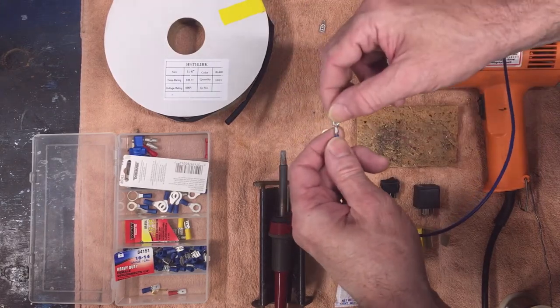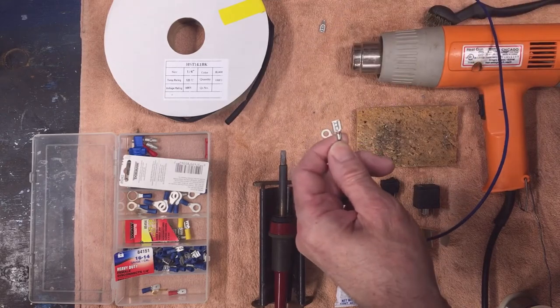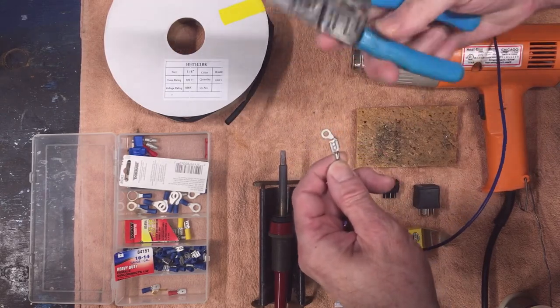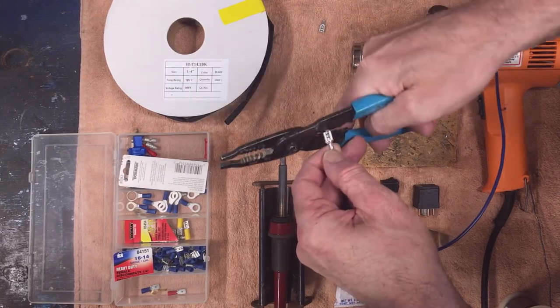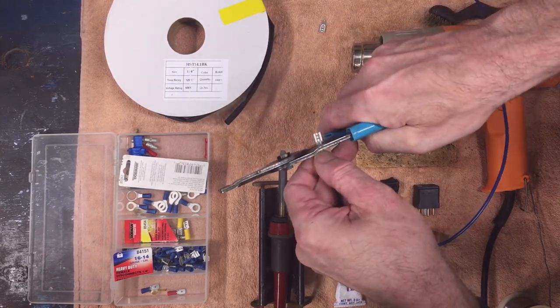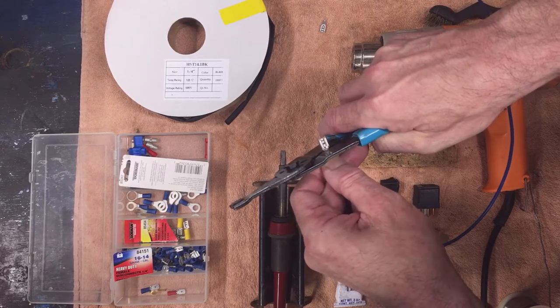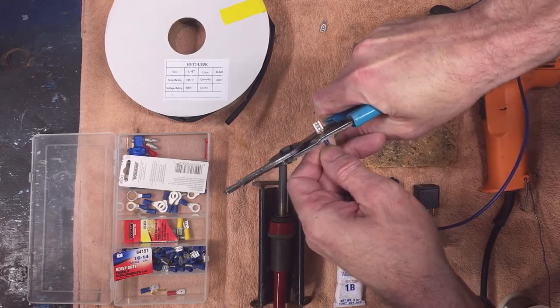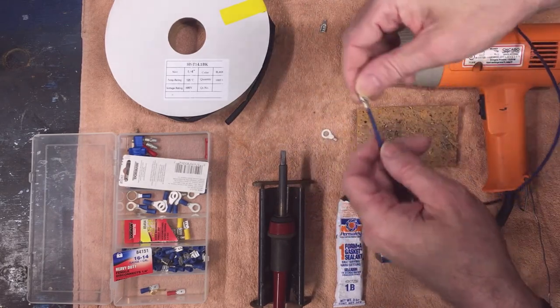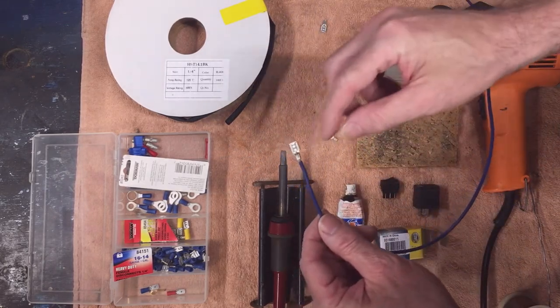Leave a little bit of wire exposed and then using my crimpers, use the correct slot and the correct orientation on your crimpers to properly crimp it just like you would with the insulation on it. That holds it in place and gives it a little bit of a mechanical connection.